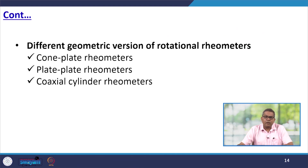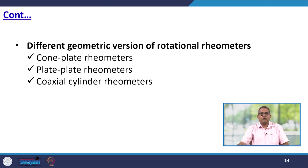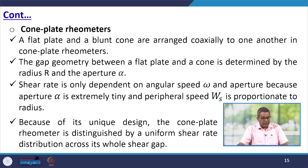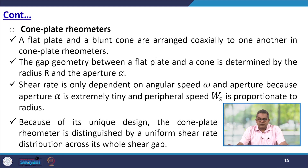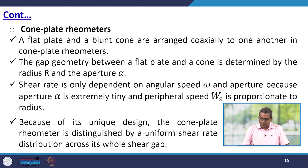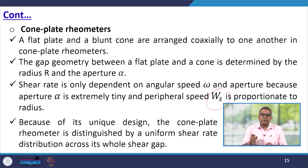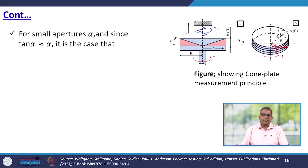Different geometrical versions of rotational rheometers are the cone-plate rheometer, plate-plate rheometer, and coaxial rheometer. In the cone-plate rheometer, a flat plate and a blunt cone are arranged coaxially. The gap geometry is determined by radius r and aperture alpha. The shear rate is only dependent on angular speed omega. Because aperture alpha is extremely small, the peripheral speed Ws is proportional to the radius, and the cone-plate rheometer is distinguished by a uniform shear rate distribution across its entire shear gap.